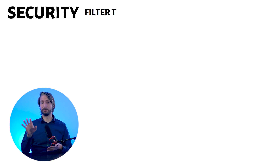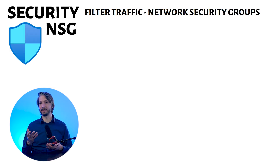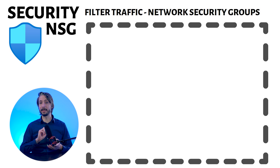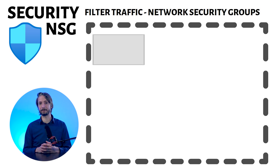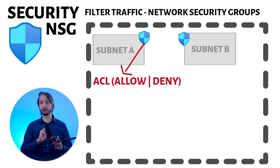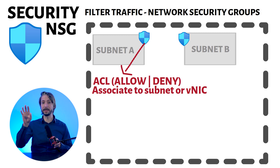You can filter network traffic to and from resources in a virtual network using network security groups. You can also use network virtual appliances (NVAs) such as Azure Firewall or firewalls from other vendors. You can control how Azure routes traffic to and from subnets, and limit who in your organization can work with resources in a virtual network. A network security group (NSG) contains a list of access control (ACL) rules that allow or deny network traffic from subnets, NICs, or both. NSGs can be associated with either subnets or individual NICs connected to a subnet. When an NSG is associated with a subnet, the ACL rules apply to all VMs in that subnet. Additionally, traffic to an individual NIC can be restricted by associating an NSG directly to that NIC.